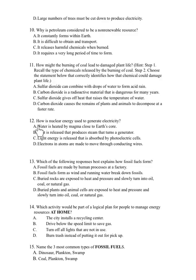Number 12. How is nuclear energy used to generate electricity? A. Water is heated by magma close to the Earth's core. B. Heat is released that produces steam that turns a generator. C. Light energy is released that is absorbed by photoelectric cells. D. Electrons and atoms are made to move through conducting wires.